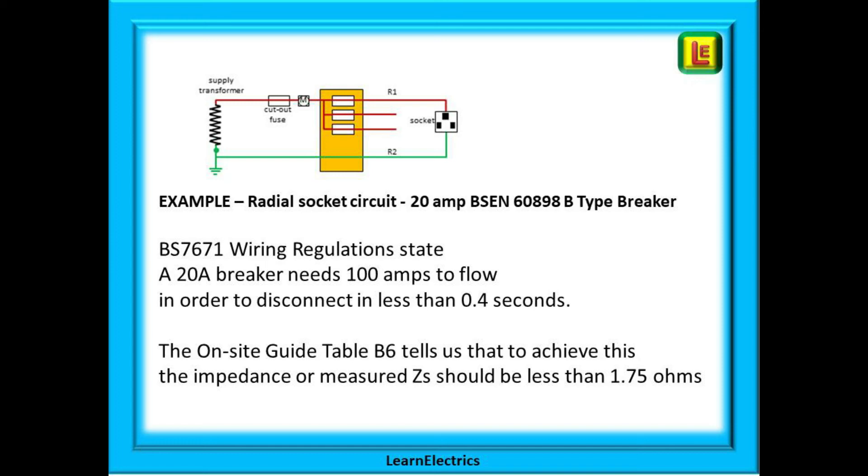We cannot easily measure currents in the circuits, but we can measure resistances and impedances with our meter, and then we can use Ohm's law to calculate the current that may flow. Fortunately, there are standard tables in the onsite guide with everything already worked out for us. They tell us what the maximum resistance of a circuit should be in order that the required minimum current will flow. In this example for a 20 amp B type breaker, the tables will tell us the maximum resistance permissible in order to achieve the required fault current of at least 100 amps. And consulting table B6 of the onsite guide, the electrician will find a value of 1.75 ohms maximum is shown.